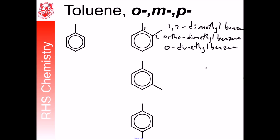Here we have 1,3. So 1,3-dimethyl benzene. However, we could also call this meta, and or m.